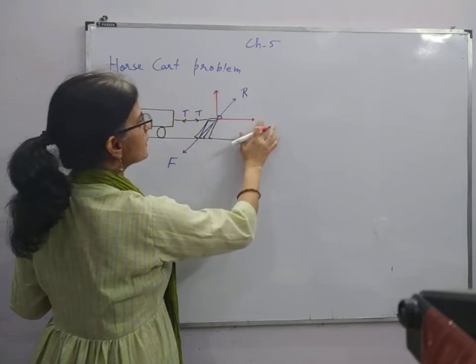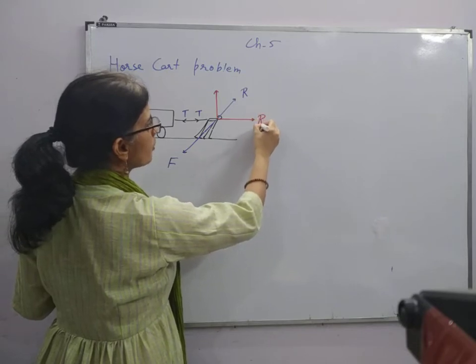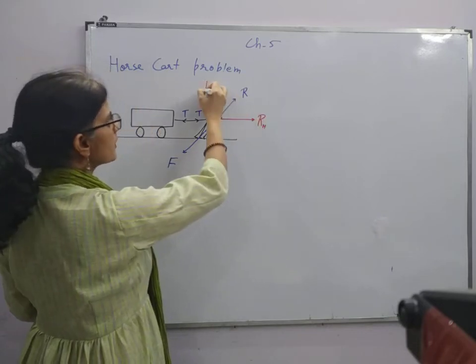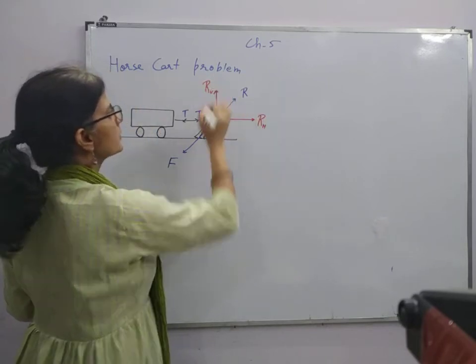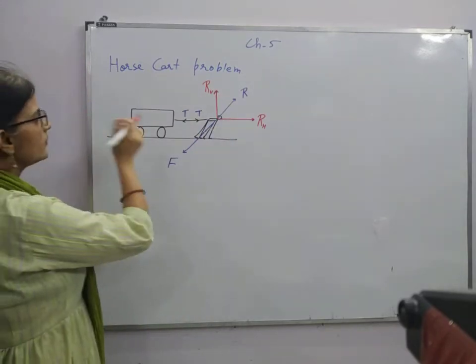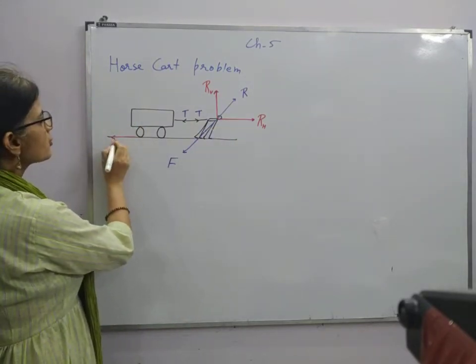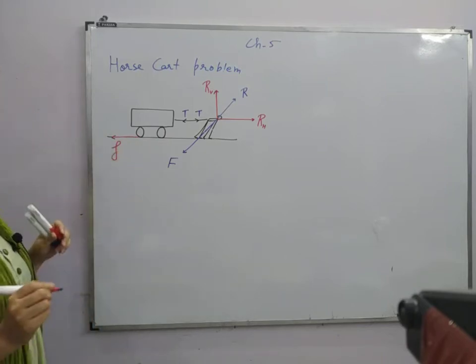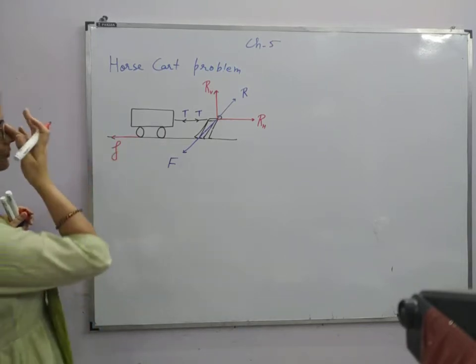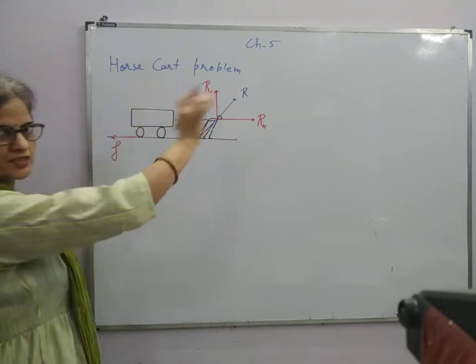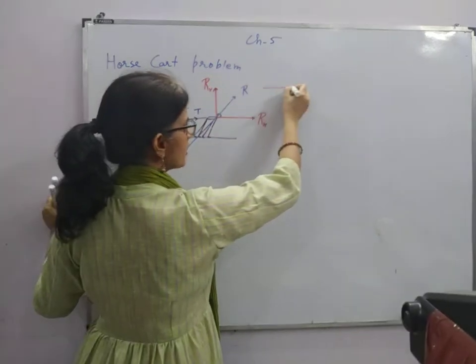I will mark these by horizontal component of normal reaction and the vertical component of the normal reaction. This friction force is acting backwards. The system is moving with acceleration A.